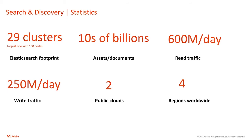To level-set our understanding of scale: we are not talking about one Elasticsearch cluster here. The infrastructure is pretty big — 29 different clusters, where the largest one has 150 nodes running. In aggregate, we're talking about tens of billions of documents stored. More than 600 million read requests per day, 250 million writes, updates, and creates per day. Two different public clouds and four different regions of the world.